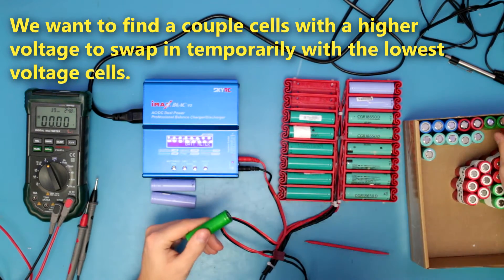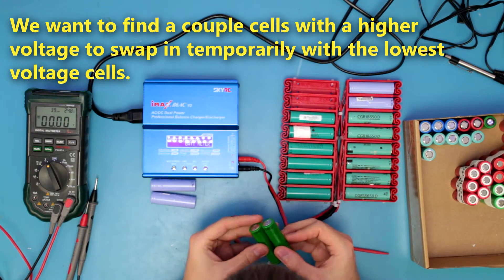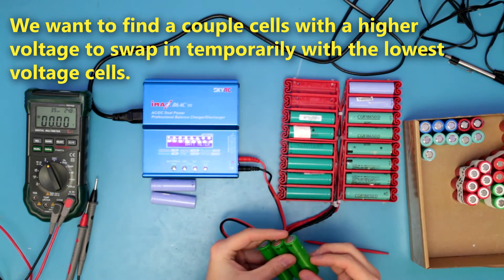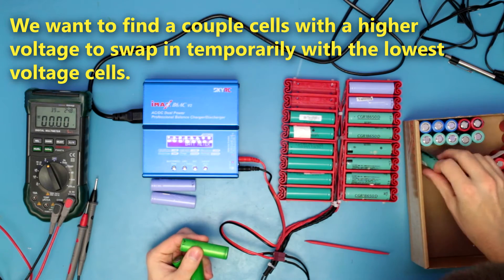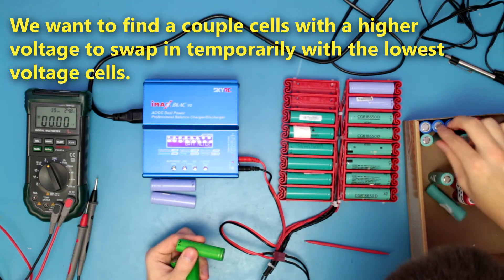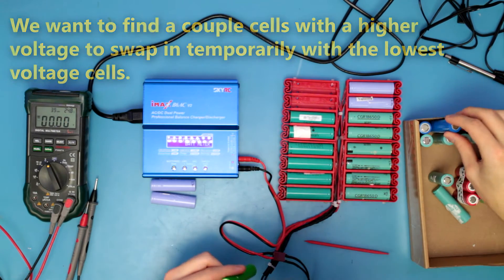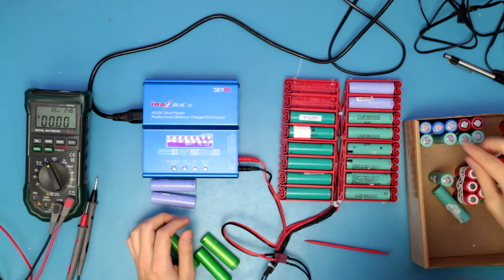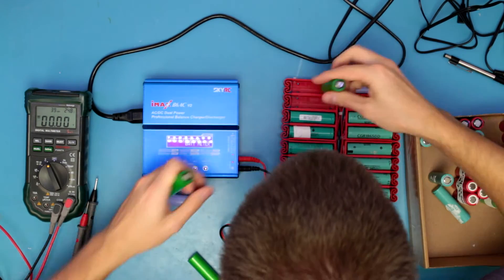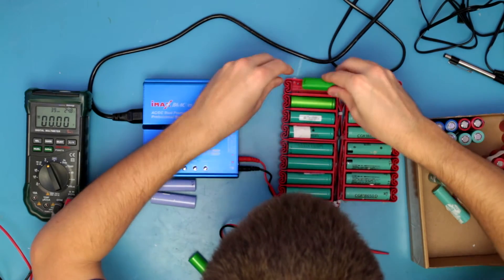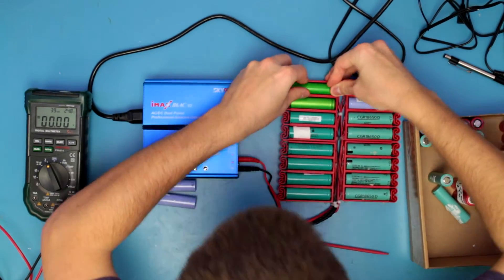What I'm going to do here is I have some other cells. They aren't exactly the same capacity. I'm looking for basically the highest capacity cell I can find here. So I got some 3.5, I got a 3.56, 3.45 and a 3.56 in here. I'm gonna go ahead and use these guys and cheat a little bit just to get everything back up to voltage.